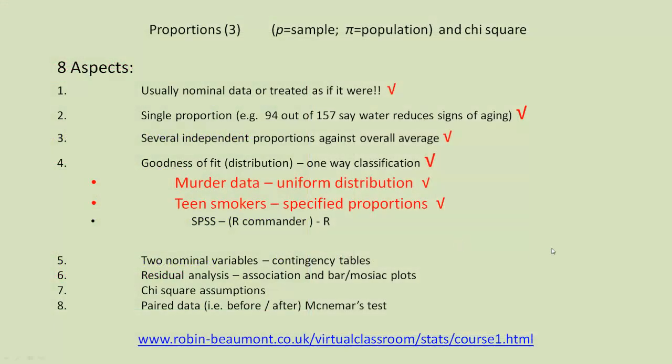So this was the third YouTube video concerned with proportions. So out of our eight aspects, we're up to number four. We looked at the single proportion. We've looked at several independent proportions against an overall average. And now we've looked at the goodness of fit or one-way classification approach. We looked at the murder data, which had the uniform distribution we compared the data with. And then we looked at the teen smokers and see how that was compared to a specified set of proportions. We used SPSS and R. We didn't really bother with R commander this time because it was so easy to do directly in R. Now we move on to contingency tables. Thank you for joining us.